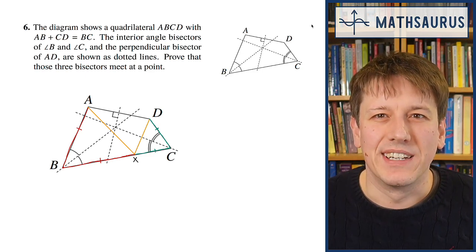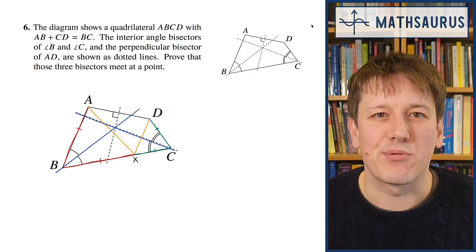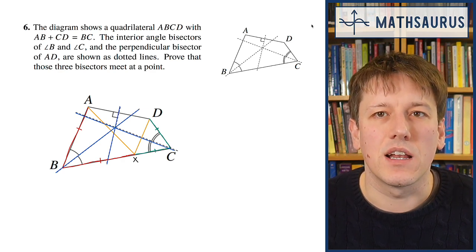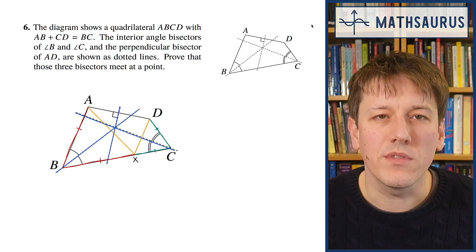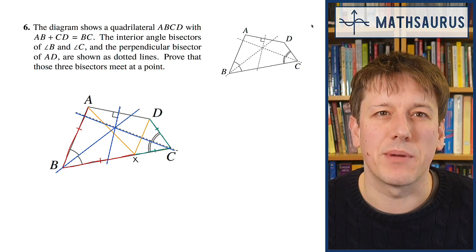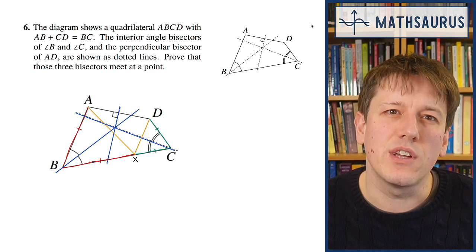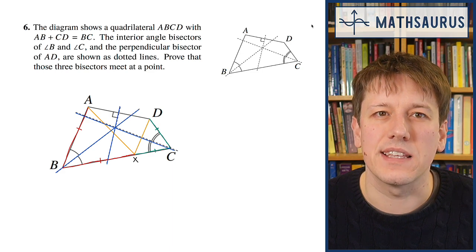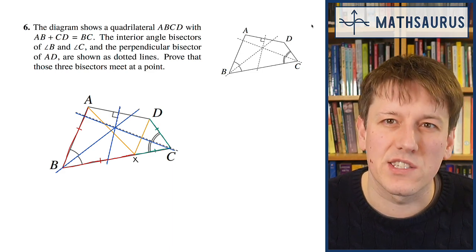The next step requires a bit of inspiration. I now want to think about these three lines. One of them, the one through AD, is just a perpendicular bisector of AD. The other lines are actually perpendicular bisectors of AX and DX, because we've got these isosceles triangles.